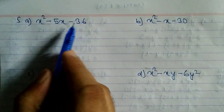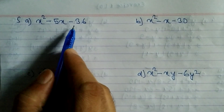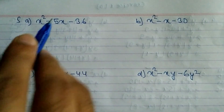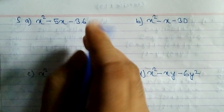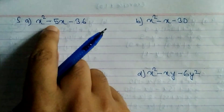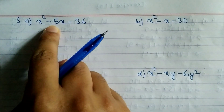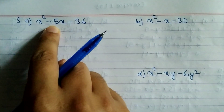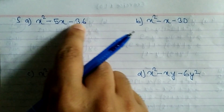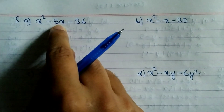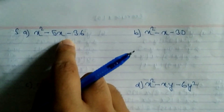We are going to factorize x² - 5x - 36. While multiplying we need 36, and while subtracting we need 5. So we have to find two numbers whose multiplication is 36 and subtraction is 5.